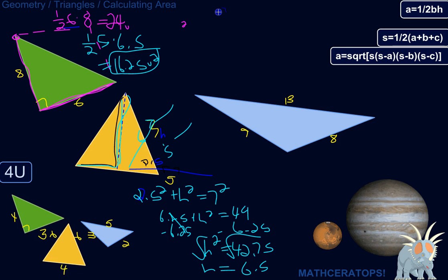So let's find S first. So S would be 9 plus 13 plus 8. So 9 plus 13 would be 22, plus 8 would be 30. And then half of that would be 15. So S is 15.